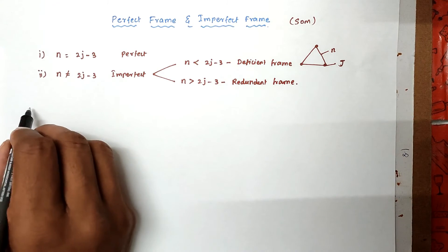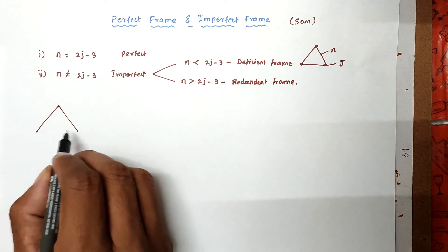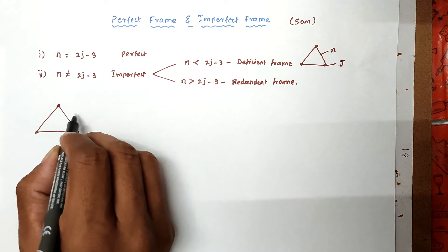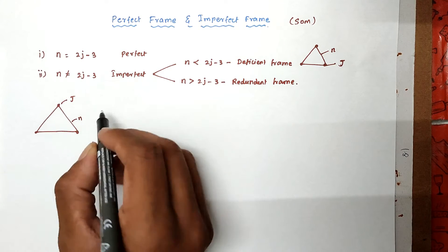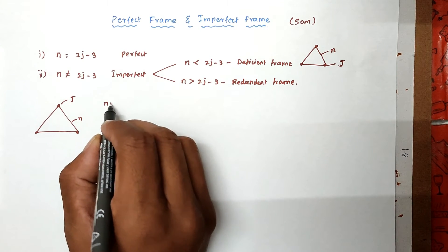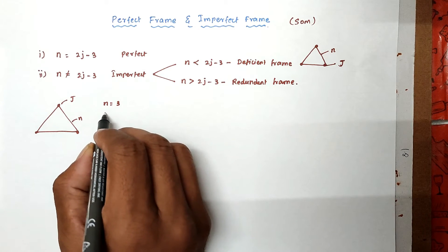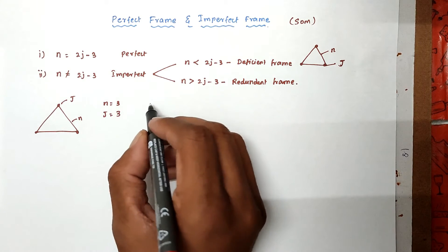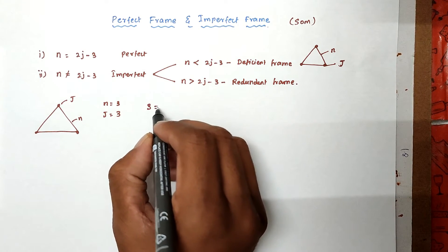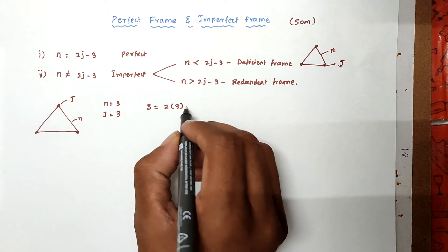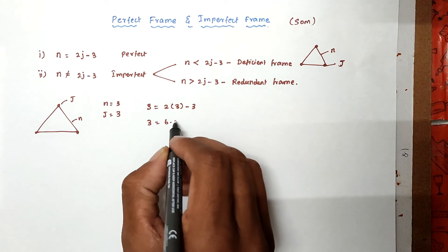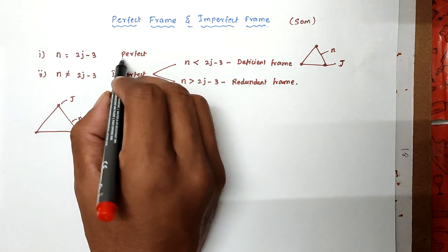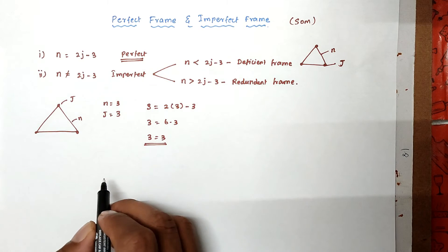For example, consider this frame. There are three members and three joints. So j equals 3 and n equals 3. Substituting in the equation: n = 3 = 2 into 3 minus 3 = 6 minus 3 = 3. So 3 equals 3. The condition is satisfied, so this is called a perfect frame.